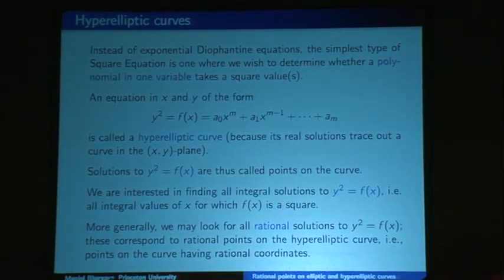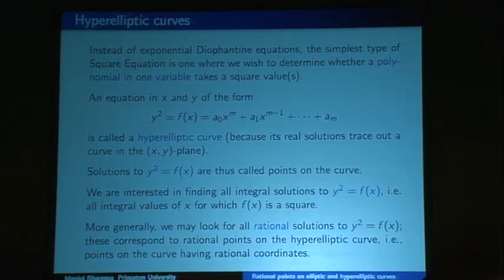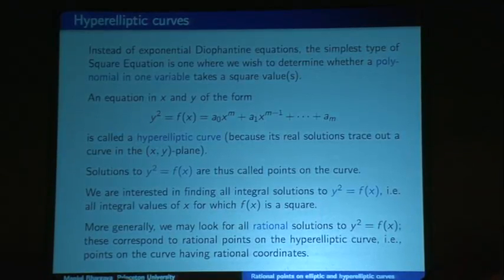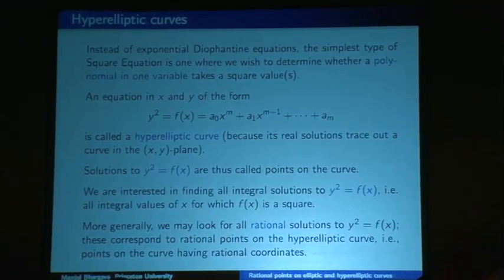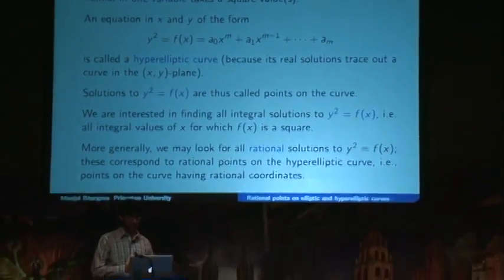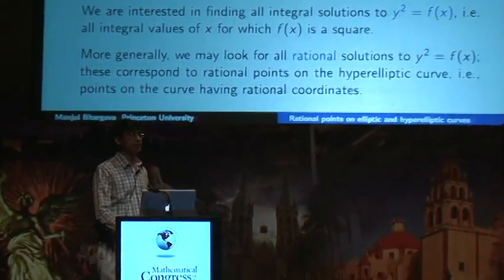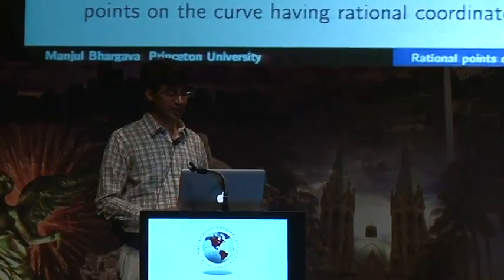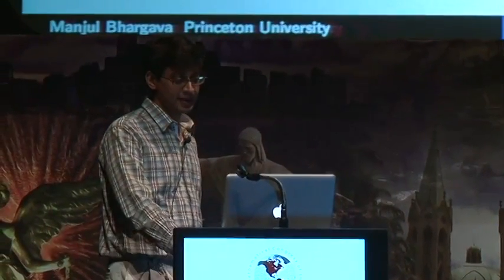That's the fundamental object I want to talk about today — rational solutions to y² = f(x). So y² = f(x) is the kind of equation we're interested in. Rational solutions are also called rational points on the hyperelliptic curve. The basic question is: how many rational points can the hyperelliptic curve y² = f(x) have? If you have some degree-n polynomial f in x with integer coefficients, how many times does it take a square value on the integers or on the rational numbers?